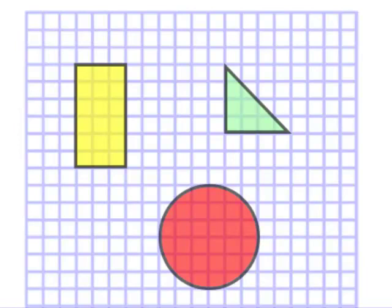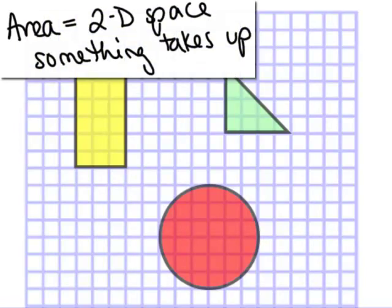The first thing we need to ask ourselves is what is area? The easiest way to understand it is that it's the two-dimensional space something takes up. We're going to measure it in squares.